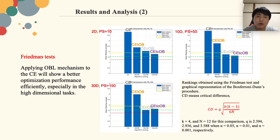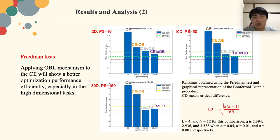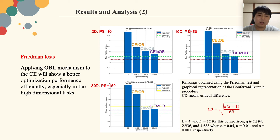Since real-world problems are complex and changeable, a simple comparison of fitness averages is not convincing enough, so we also use statistical methods to evaluate them. In these pictures, the x-coordinates present the names of the proposed and conventional methods, and the y-coordinate presents the mean ranking averages. A lower mean ranking average means better performance. From the average mean ranking, we can observe that the proposed algorithm CETCOB is the best among these four algorithms in the 2-dimensional, 10-dimensional, and 30-dimensional benchmark functions.